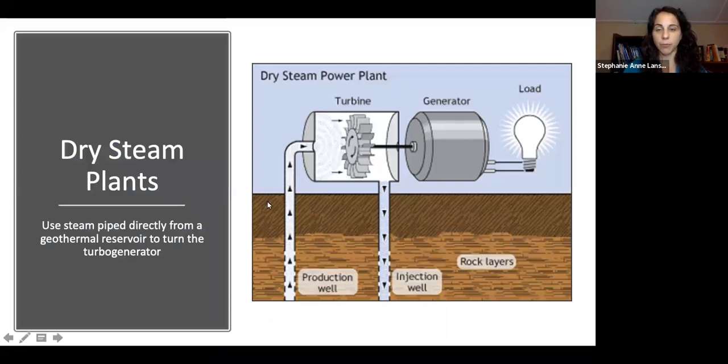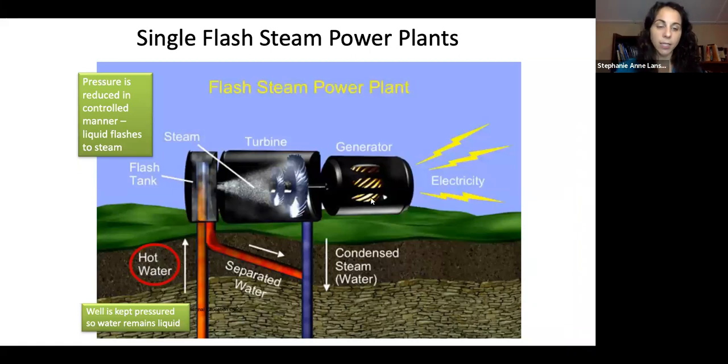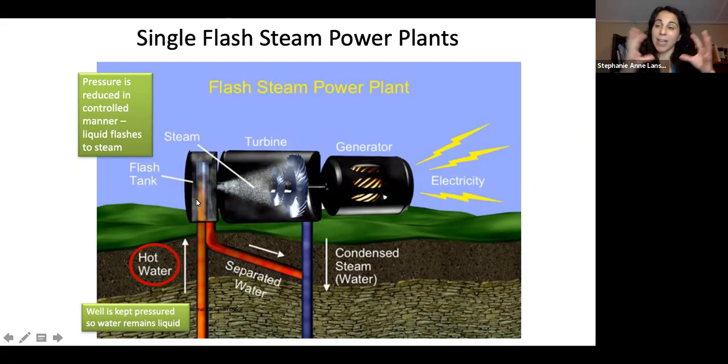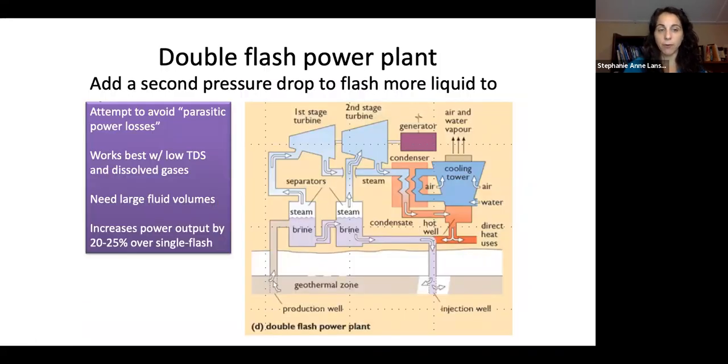Dry steam plants have dry steam moving the turbine and then the injection well—direct use systems for electricity. Single flash systems have hot water and a flash tank where pressure releases the steam. The separated water stays for injection. Double flash with low total dissolved solids and not many dissolved gases can do a first and second drive. It needs larger liquid volumes but can increase output over 25 percent compared to single flash.